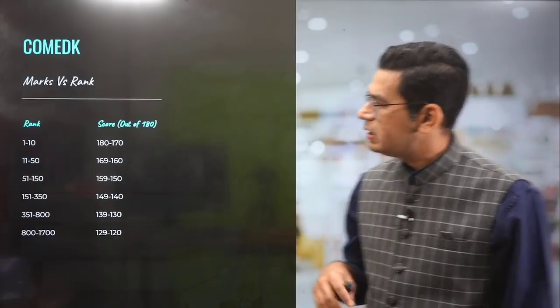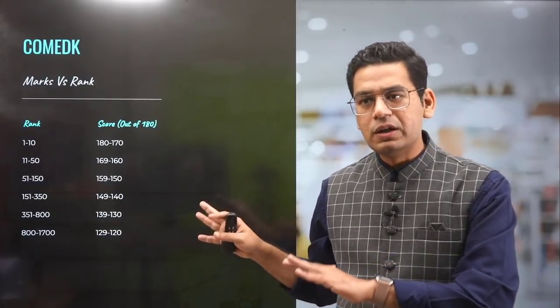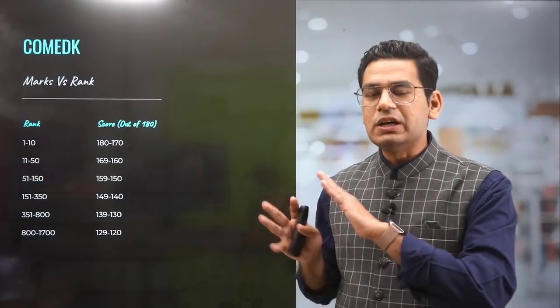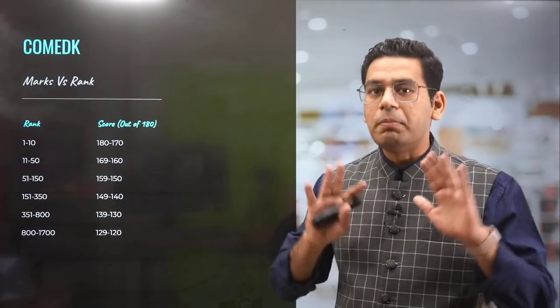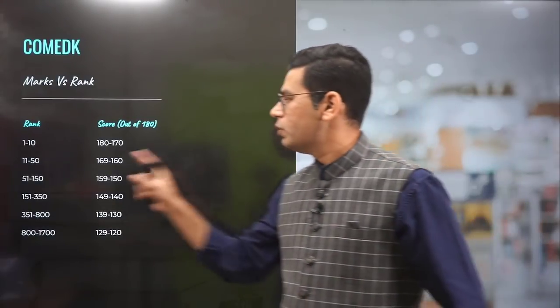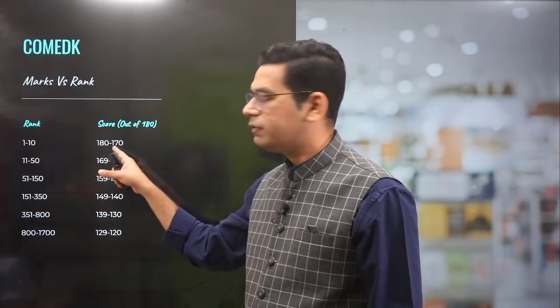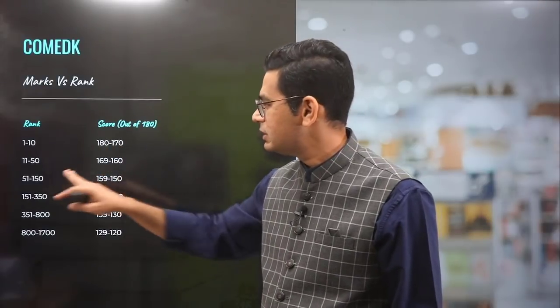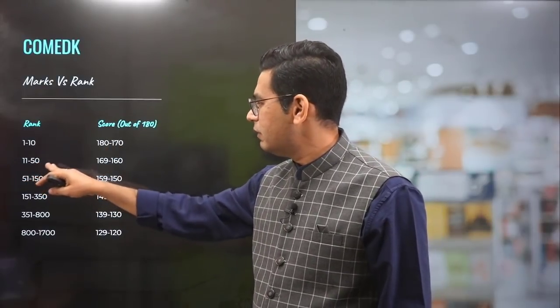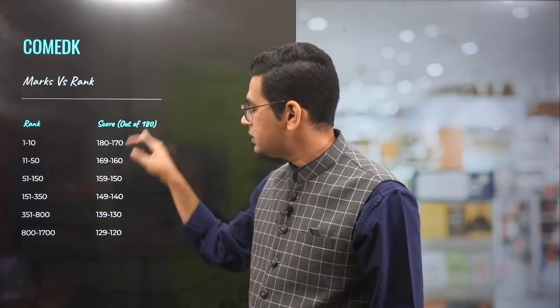Now, COMEDK marks versus rank — you can let us know in the comment section if these are correct or not, because these might be slightly off. For the first 10 ranks, you almost have to secure more than 170 marks. For ranks 11 to 50, it's 169 to 160, which is very high.